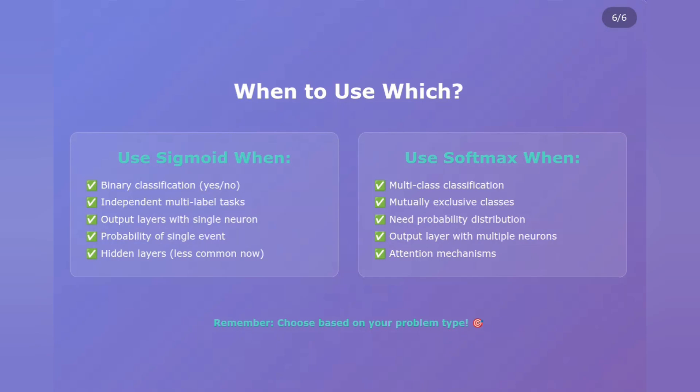Remember this: choose based on your problem type, not just because one sounds fancier. Binary problem? Sigmoid. Multi-class problem? Softmax. It's that simple.